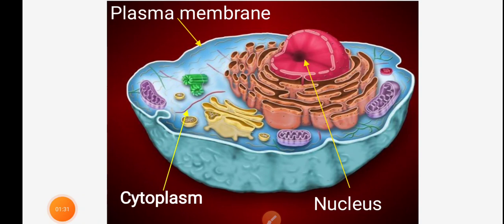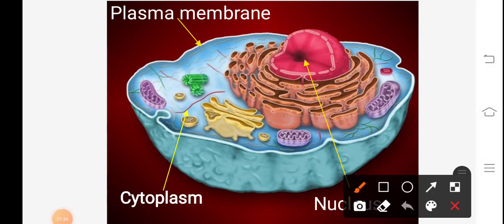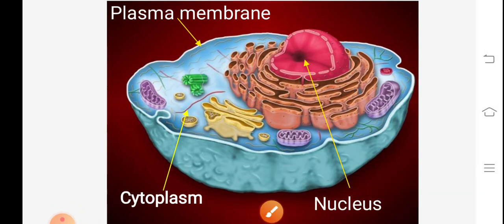Animal cells consist of three main components: plasma membrane, cytoplasm, and nucleus. The plasma membrane is also called the cytoplasmic membrane or cell membrane. It is a thin semi-permeable membrane layer of lipid and protein surrounding the cell. Its primary role is to protect the cell from its surroundings and to control the entry and exit of nutrients and other microscopic entities. For this reason, the cell membrane is also known as the semi-permeable or selectively permeable membrane.